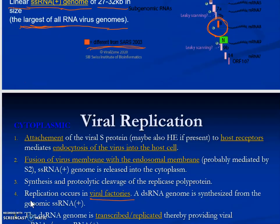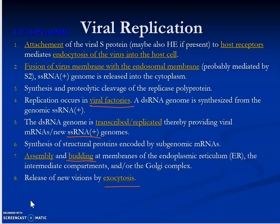The viral replication steps follow a typical pattern: attachment to the host cell, then entry via fusion of the virus membrane with the endosomal membrane. The virus then employs the host cell as a viral factory to produce more viral particles. This requires transcription and replication of viral components, followed by assembly of viral particles, and finally the virus buds off the host cell. The release of new viral particles occurs by exocytosis.